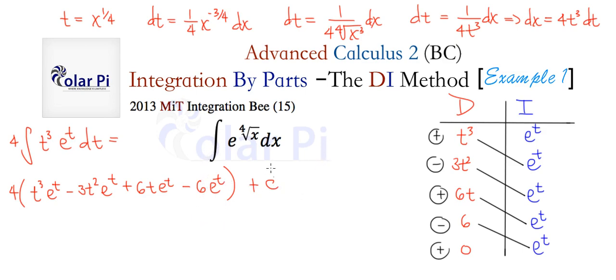Of course, to actually finish this problem, you need to replace all of these T's by what we said T was, the fourth root of X. But I'm not going to do that here, because this is about the DI method, not about solving this MIT integration B problem. There will definitely be an example two and perhaps an example three. Keep watching. Take care.